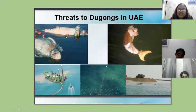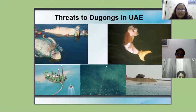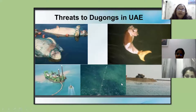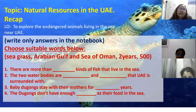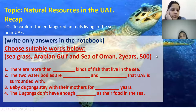The teacher outlines the main threats to dugongs: getting caught in fishing nets, dredging, and polluted water — referencing the dirty water shown earlier in the tub image. She confirms all students have understood the lesson about dugongs and their importance to the UAE coastal region.